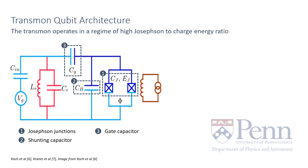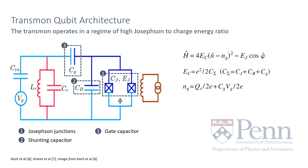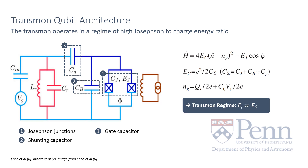This means that the superconducting quantum interference device, or SQUID, consists of a superconducting closed loop interrupted by two Josephson junctions. We also define the effective Hamiltonian as shown here on the right, where N sub G is the effective offset charge on the device in units of Cooper pair charge. The shunting is the key difference here between the transmon and the Cooper pair box, and it allows us to operate in this regime with Ej much greater than Ec.